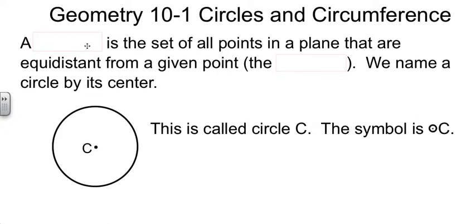First off, we need to know what a circle is. It's nothing more than all the points in the plane, in the same plane here, that are equidistant from a given point, and that given point we call the center. You've known this for a long time. Everything is the same distance away from the center point.